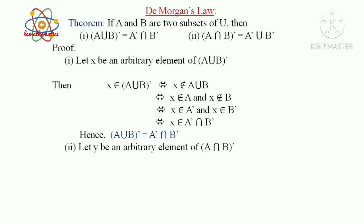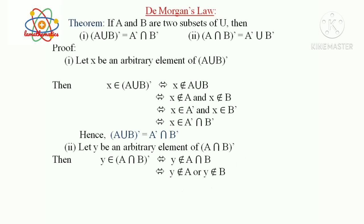Let Y be an arbitrary element of (A intersection B)'. Y is an element of (A intersection B)'. Since Y is not in A intersection B, that is, Y is not an element of A or Y is not an element of B.